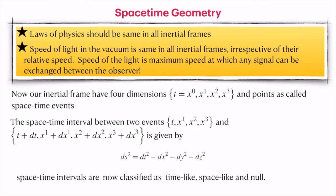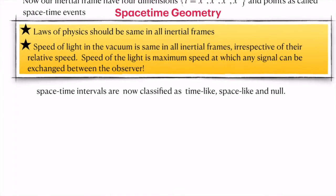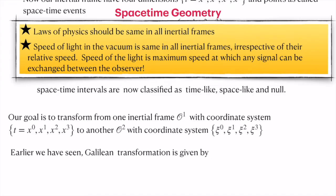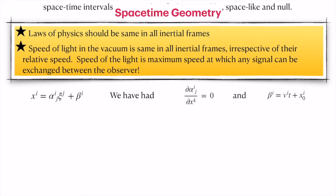The space-time interval is classified into three types: time-like, space-like, and null. Our goal is a transformation from inertial frame O1 with coordinate system x^μ to O2 with coordinate system ξ^μ. Let's quickly recollect the Galilean transformation: ξ^i = α^i_j x^j + β^i, where α^i_j must not depend on any variable, and β^i takes the specific form β^i = vt + x₀, representing uniform motion. We now need to translate this into a condition that preserves the speed of light.